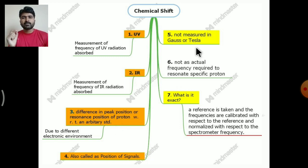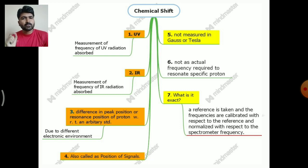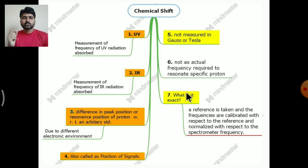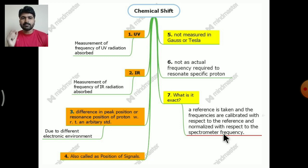The chemical shift is not a measurement of the magnetic field applied to resonate specific protons, nor is it the actual frequency required to resonate the proton. Instead, a reference is taken and the frequencies are calibrated with respect to that reference, which is TMS, and these frequencies are normalized with respect to the spectrometer frequency.